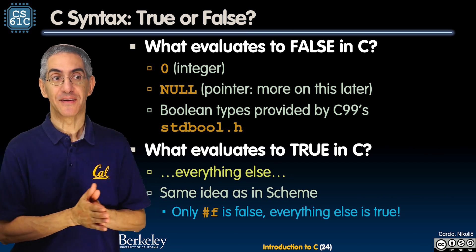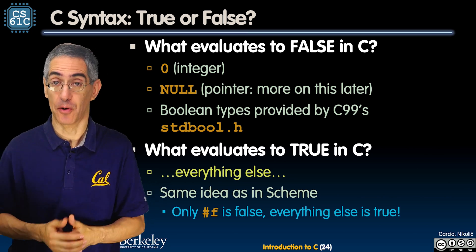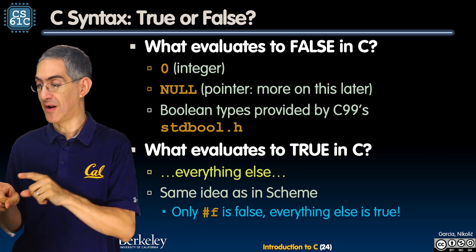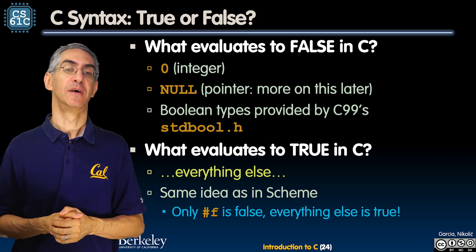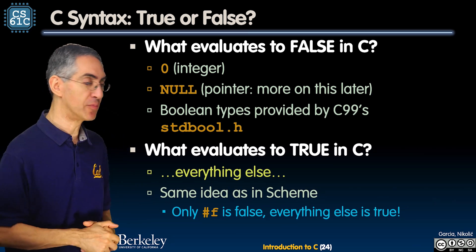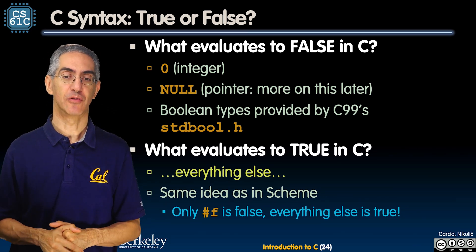Turns out null is actually defined as zero. So if you say a pointer, I got a pointer here and if you set the pointer to null which means it's not set to endpoint to anything that really means the pointer set to zero. And I mentioned before the standard bool dot h defines official boolean types you want to use that.